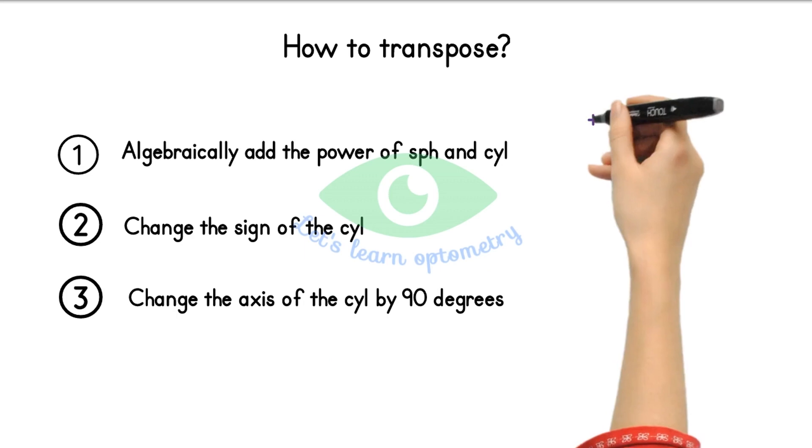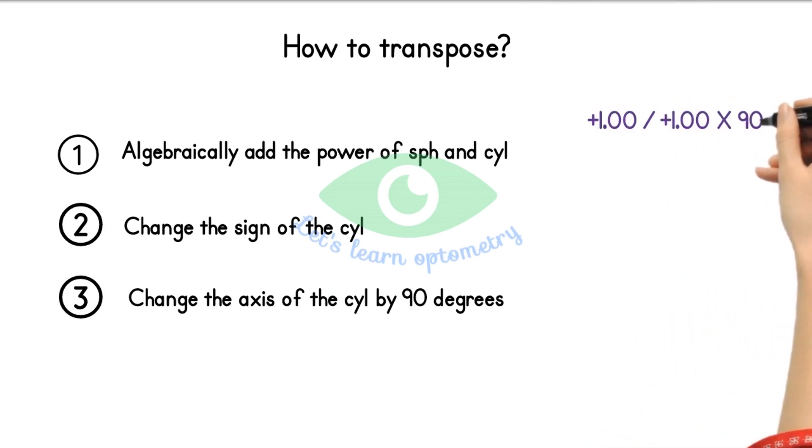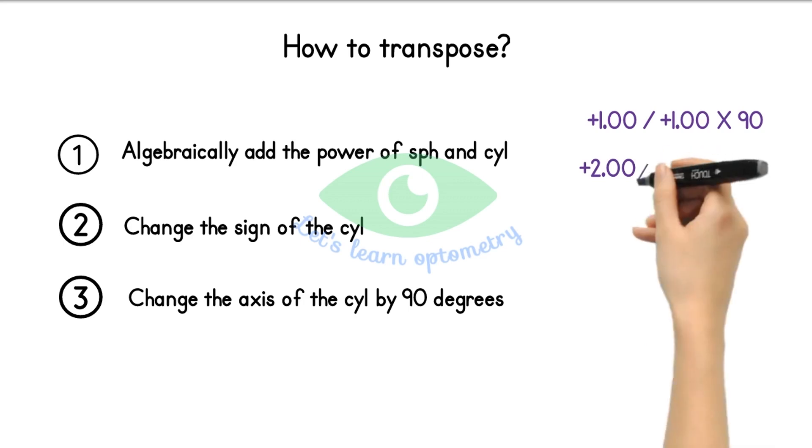So let's see an example: plus 1 spherical plus 1 cylinder at 90 degree axis. So I need to first add the spherical and cylindrical powers. So if I add plus 1 and plus 1 I get plus 2. So this is my new spherical power. Then according to my second step I need to change the sign of the cylindrical value. Now my plus 1 cylinder becomes minus 1 cylinder.